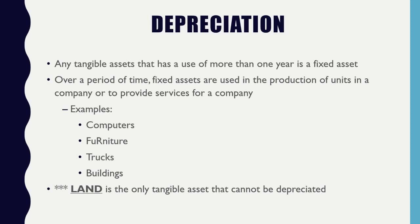One important rule: land can never be depreciated. In basic accounting, land uses a different process called depletion. As you advance in accounting, you'll learn that land has natural resources — oil, diamonds, valuables in the soil — and when those resources are extracted, the land is depleted rather than depreciated.